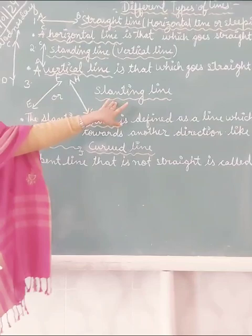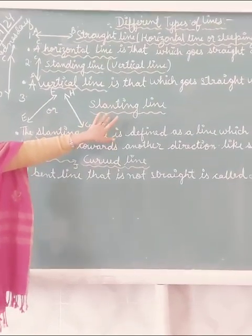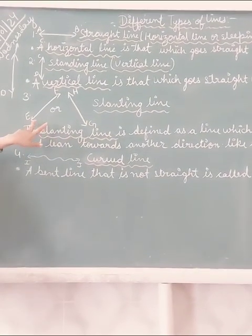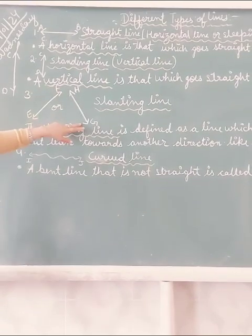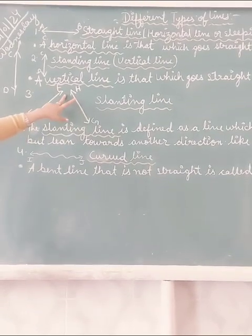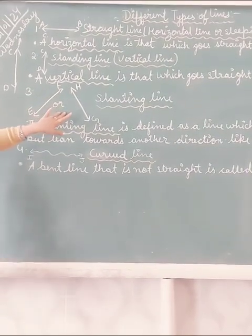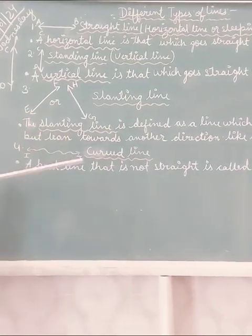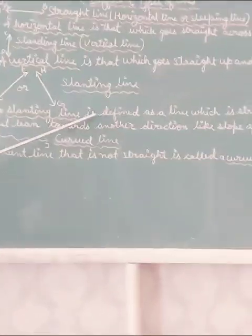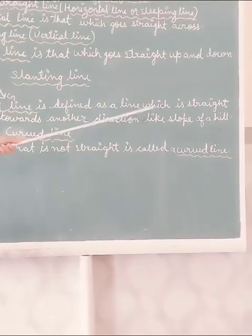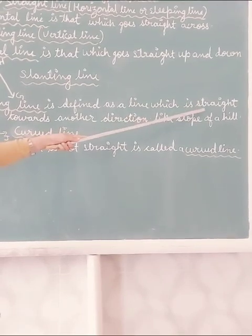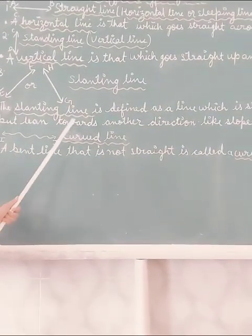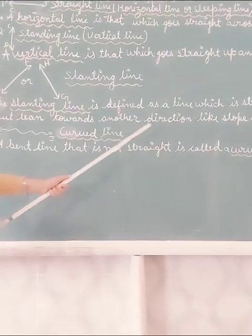Your third line is the slanting line. As you can see, I have drawn points E, F, G, and H — both are slanting lines. A slanting line is defined as a line which is straight but leans towards another direction.